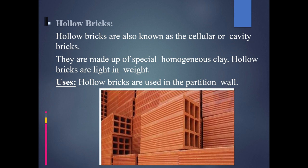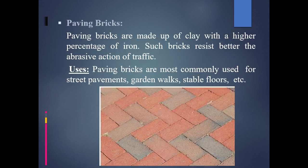Next we have hollow bricks. As you can see in the diagram, hollow bricks are hollow inside — they are cellular or have a cavity inside, which is why they are also called cellular bricks or cavity bricks. They are made up of special homogeneous clay. Hollow bricks are light in weight because the inside mass is completely eliminated, and they are especially used in partition walls.